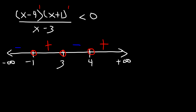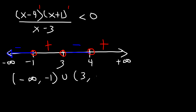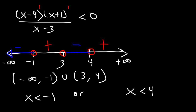We want the portion of the graph that is less than 0, or negative. So the answer in interval notation is negative infinity to negative 1 union 3 to 4. As an inequality: x is less than negative 1, or x is between 3 and 4.